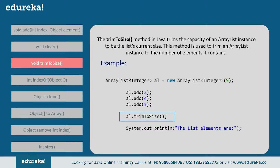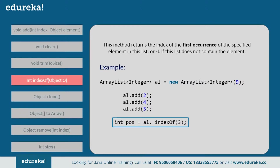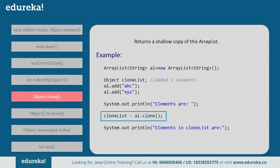Next, trimToSize() — this method trims the capacity of an ArrayList instance to the list's current size. For example, if you create an ArrayList of size 9 and add only three elements, on calling trimToSize() it trims the ArrayList from 9 to 3, reducing it to the number of elements it contains. Next, indexOf() — this method returns the index of the first occurrence of the specified element in the list. If that element is not present, it returns minus one. For instance, to find the index of five in the list, if five is at position two, it returns two; if you search for three and it's not present, it returns minus one. Next, clone() — this method returns a copy of the ArrayList; on calling it, it clones the entire ArrayList.